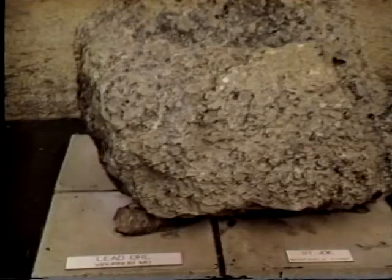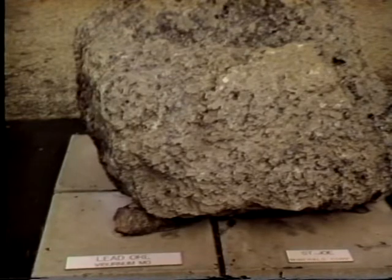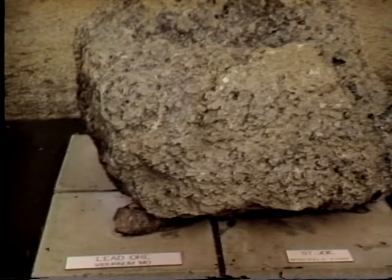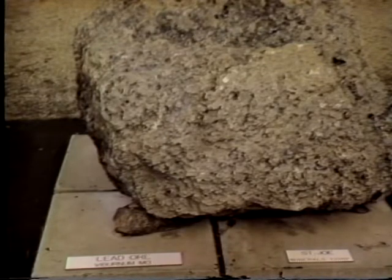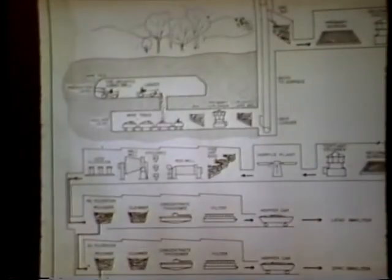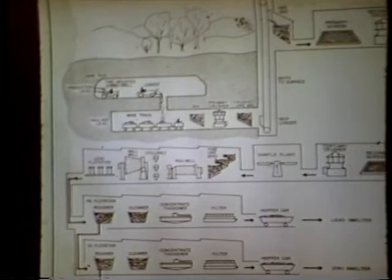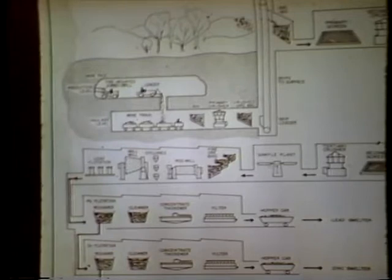The next slide shows an example of the ore taken from the viburnum mines — it's a disseminated lead shot through the dolomite. As the dolomite was removed by solution, the lead was deposited in its place. A schematic of the mining operations shows that the mines are worked at several levels — the ore is mined, dumped into a shaft, and then hoisted to the surface where it is milled and then later smelted.